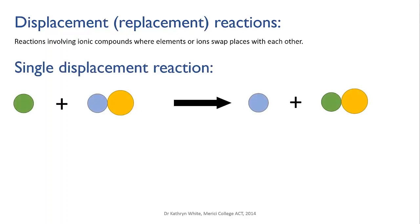In a single displacement reaction, one element is displaced from a compound by another one. You can see this represented by the green circle kicking out the blue circle from the compound and taking its place.